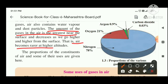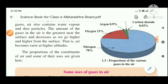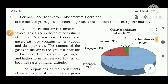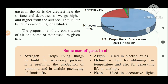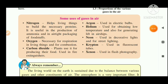Here is diagram 1.3 showing the proportions of various gases. The largest proportion is nitrogen at 78%, then oxygen at 21%, then argon at 0.9%, carbon dioxide at 0.03%, and other gases at 0.07%.